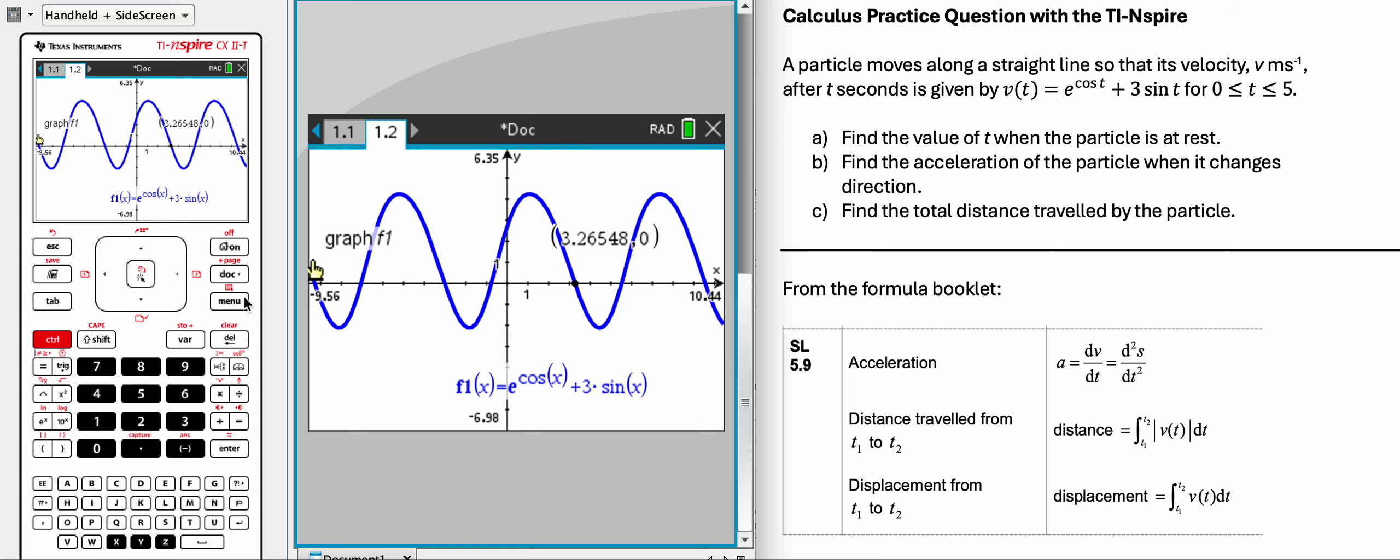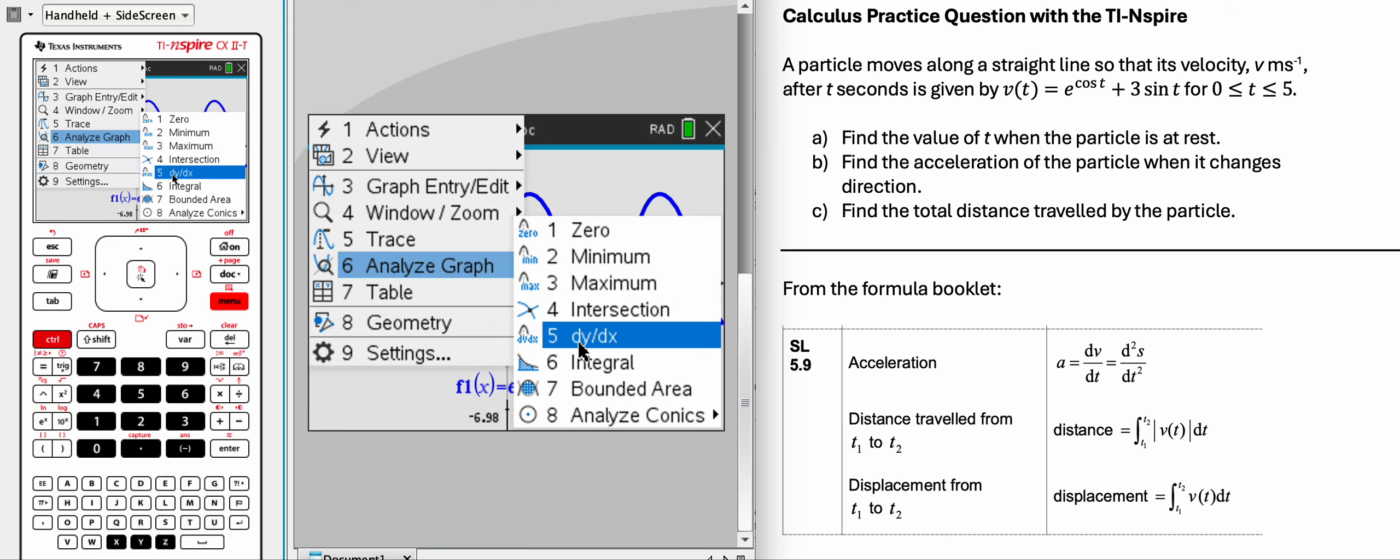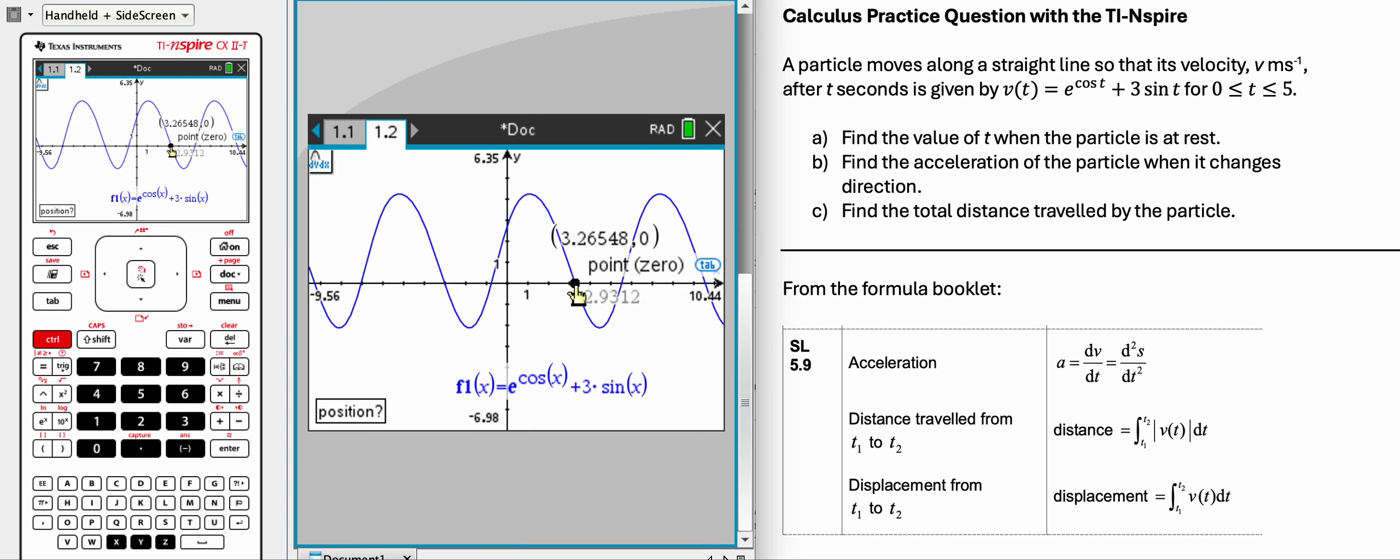Now, that's really easy with this calculator, because you can go to menu, you can go to analyze graph, dy by dx, at this x-intercept right there, and it's giving us negative 2.93.